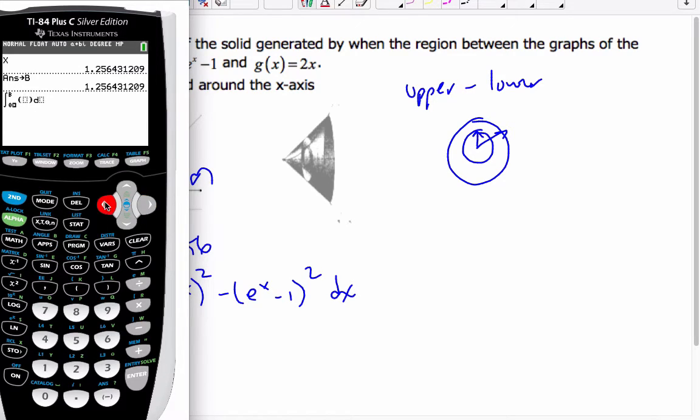And I'm going to put pi in here first. I'm going to insert pi. And now I'm going to do my top function. If I look at my functions as y1. So I'm going to go alpha trace, which is the y1 squared, minus y2 squared. With respect to x, I hit enter.